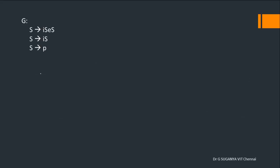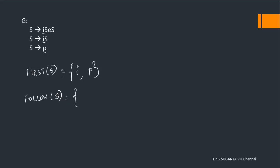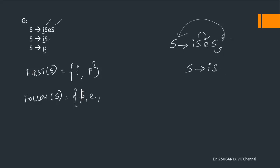One more example: a grammar with one non-terminal S and three productions. FIRST of S: the first production starts with terminal 'i', include it; the second starts with the same symbol; the third starts with another terminal. For FOLLOW of S: S is the start symbol so include dollar. S also appears in two other positions in the productions — in one it is followed by a terminal, add it directly; in the other S is last, so go back and add FOLLOW of S. So FOLLOW of S = {i, $}.